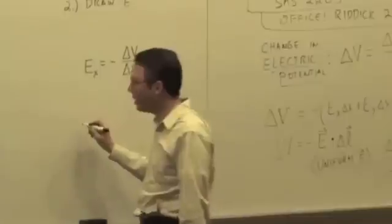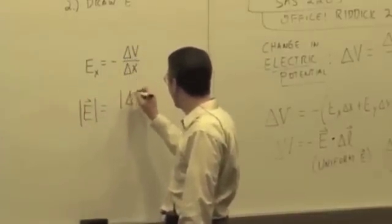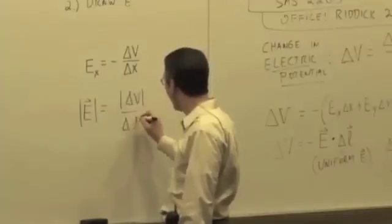We don't care about the sign, so we're saying that the electric field magnitude in this particular case is just delta V over the magnitude of delta L.